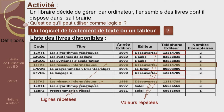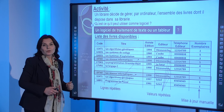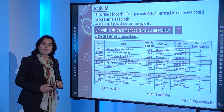Les lignes répétées augmentent aussi le volume de données. Le libraire peut espérer ne pas être obligé à mettre à jour manuellement le nombre d'exemplaires suite à chaque opération de vente ou de réapprovisionnement.